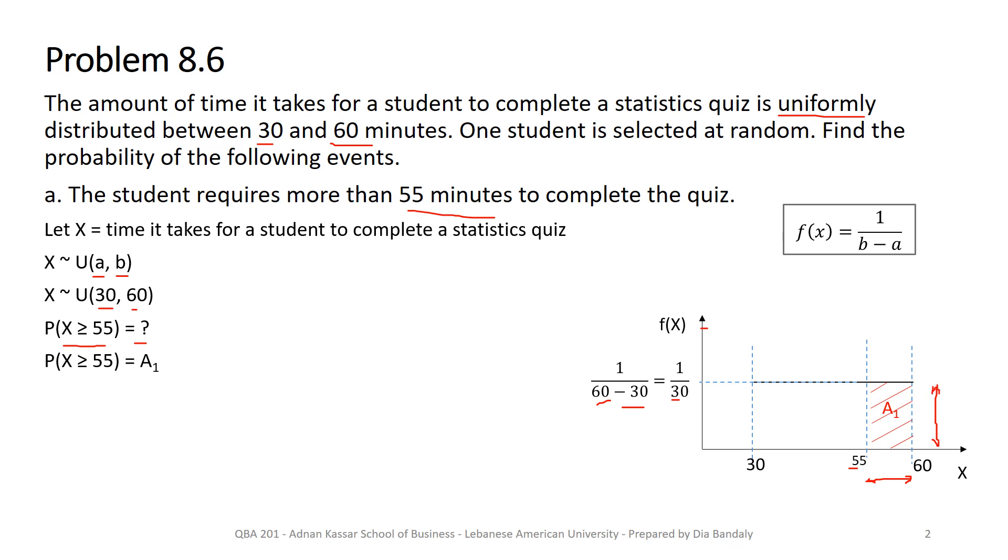So let's call that A1. So which means probability that x is greater than 55 is A1. So all what I need to do now is to find the area of A1. You know this is a rectangle and the area of a rectangle is the base times the height. I know the base which is 60 minus 55 so it's 5 and the height I know it, it's 1 over 30. So that's it. This is our probability. Very simple.